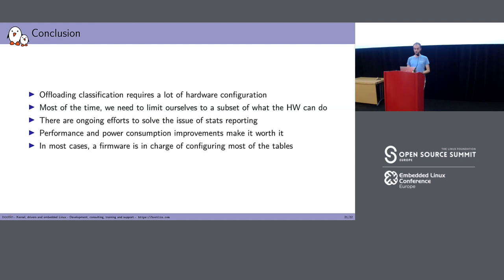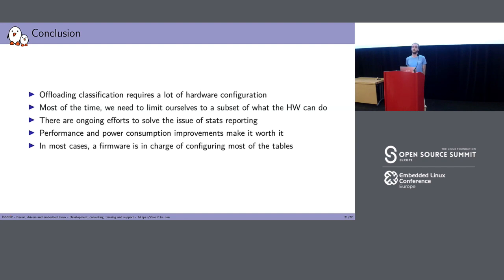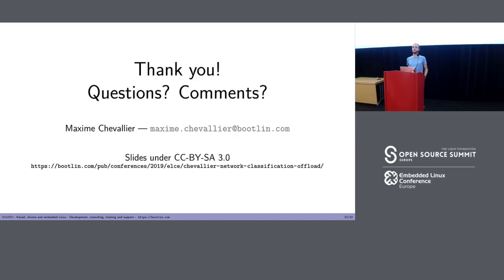Hopefully you've learned a thing or two. You have to take into account a lot of things when doing classification offloading. The most obvious thing is that in this situation, the hardware will be doing stuff behind the CPU's back. So if you have a bug or a misconfiguration, it can be very hard to troubleshoot. There are ongoing efforts to report all of the statistics that the hardware reports to user space. Most of the time the performance improvement makes it worth it, especially in the embedded world. We are starting to see interesting things where this is not done by firmware — which in my opinion is a big win. If you have any questions, I would be happy to answer.